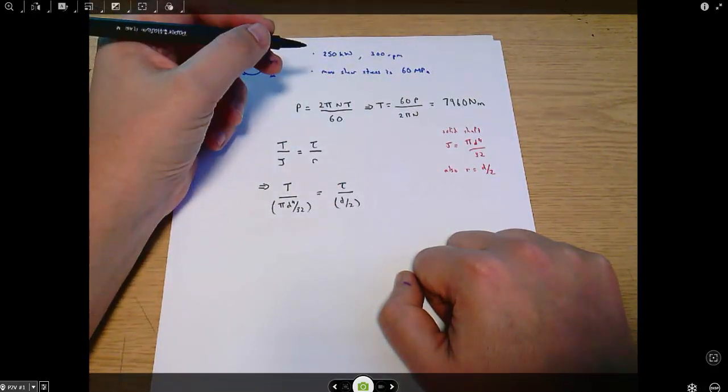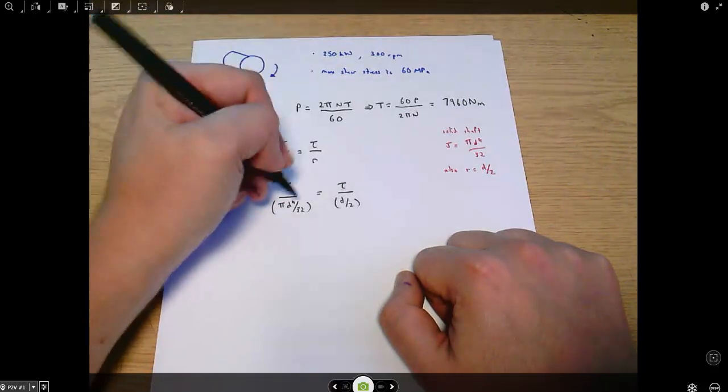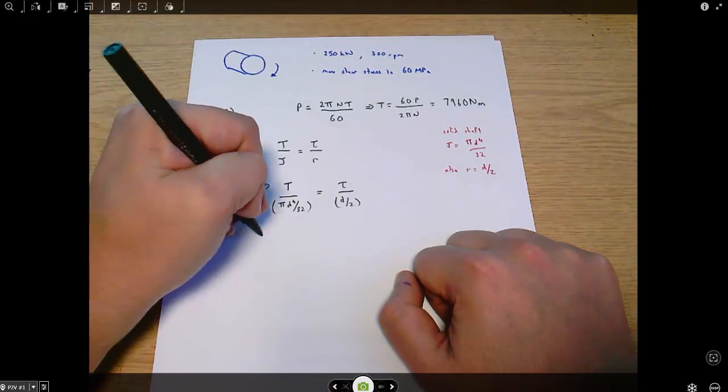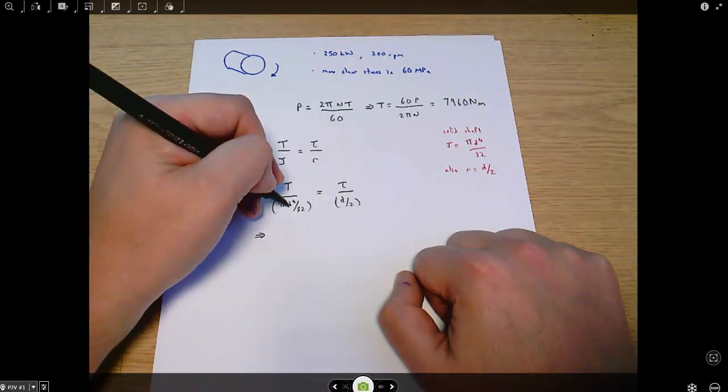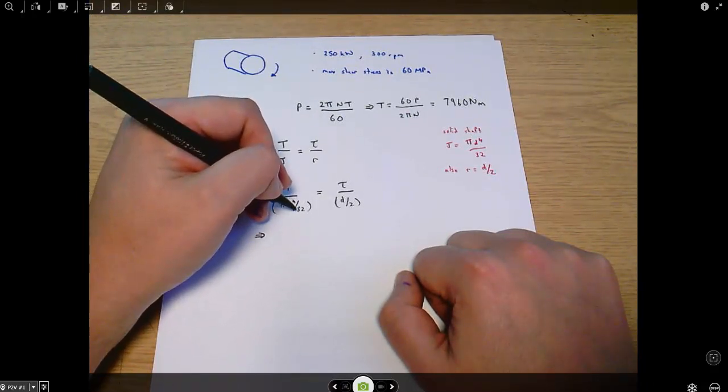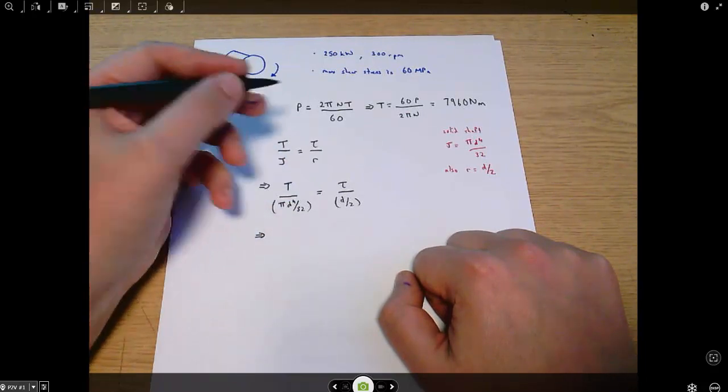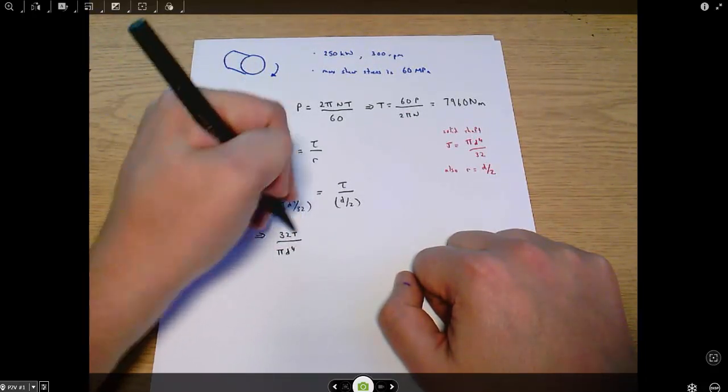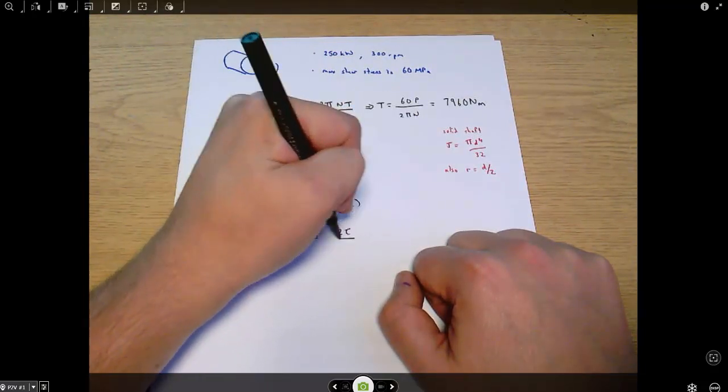When I rearrange all of that, the first thing that's helpful to do - I've got denominators within denominators here. If you're dividing by something that itself is divided by something, this 32 moves up to the top. So I get 32T over pi d to the 4 equals 2 tau over d.